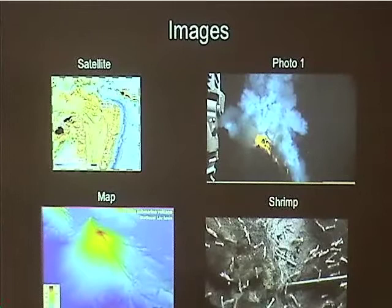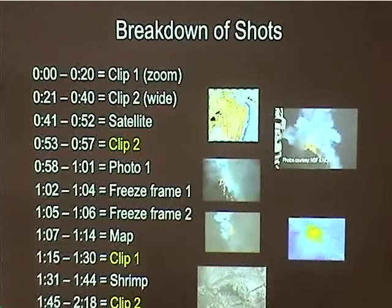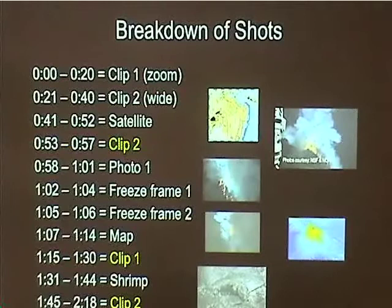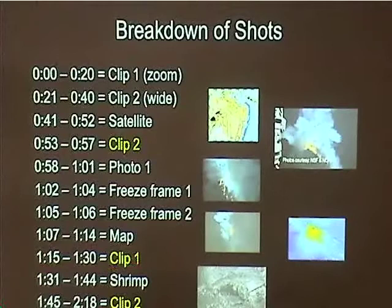Looking at the breakdown of shots in the video — 218 seconds total — the first 20 seconds used clip one, the zoom shot. From 21 to 40 seconds, they used clip two, the wide shot. Then they introduced the satellite photo, went back to clip two, then to a high-resolution photo, and two freeze frames — basically still captures from the video, very easy to produce using editing software. Then they showed a map of the underwater volcano, went back to clip one, introduced the shrimp, and finished with clip two again. That's all that was needed to tell that story.